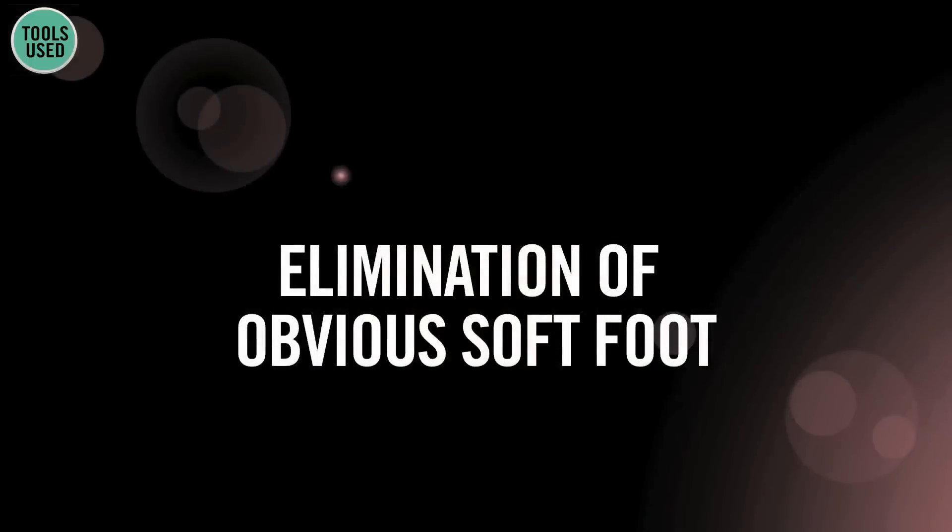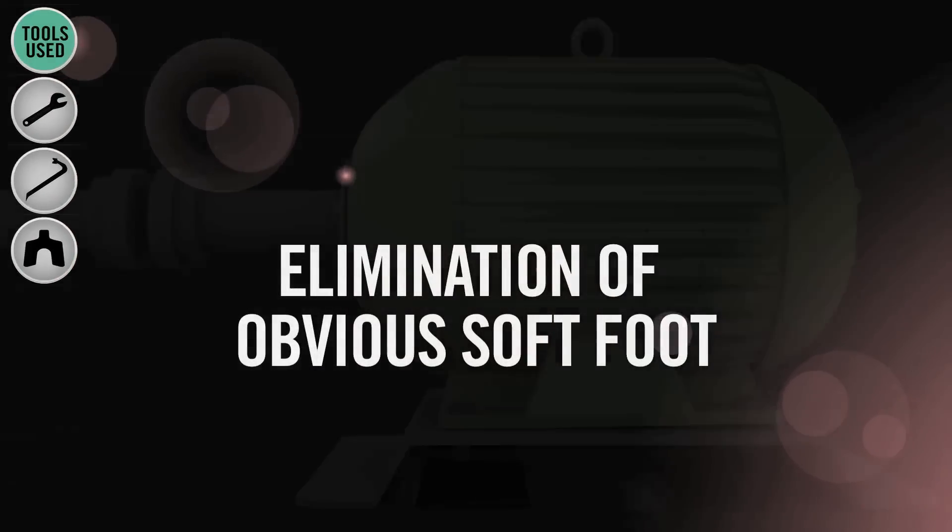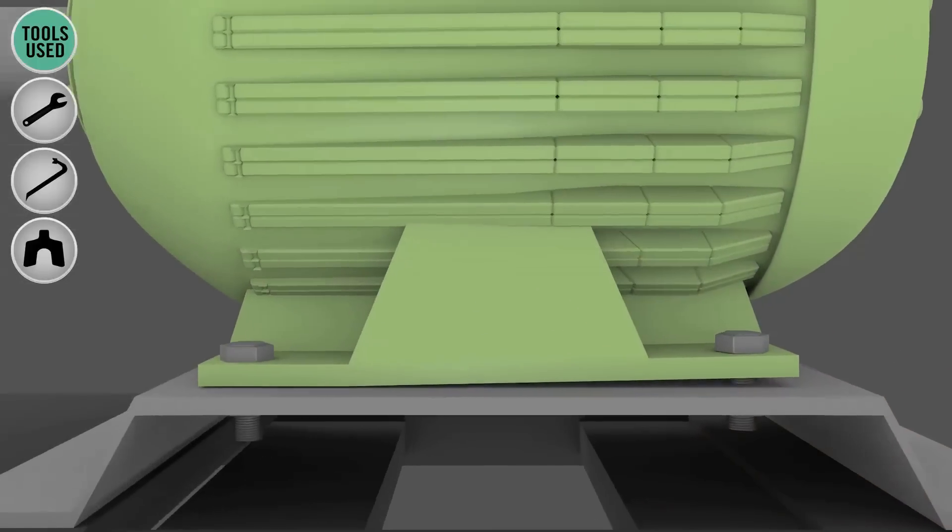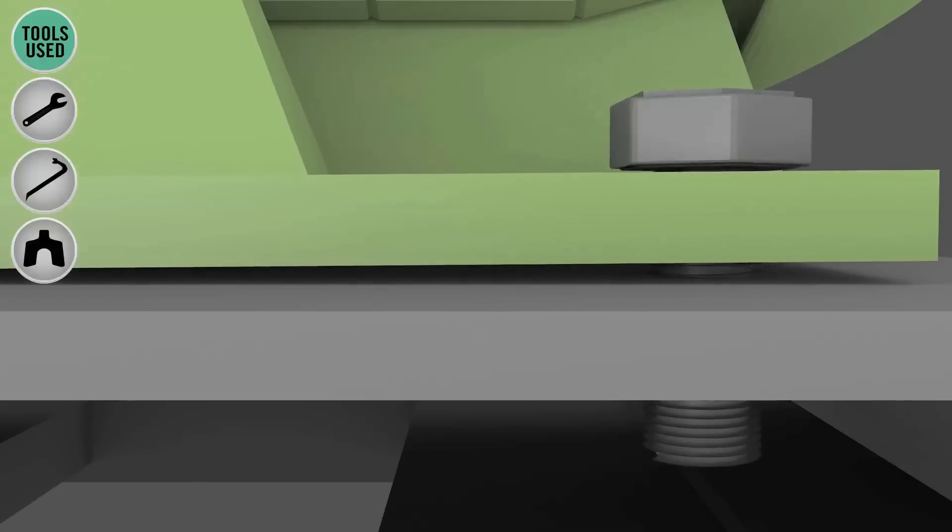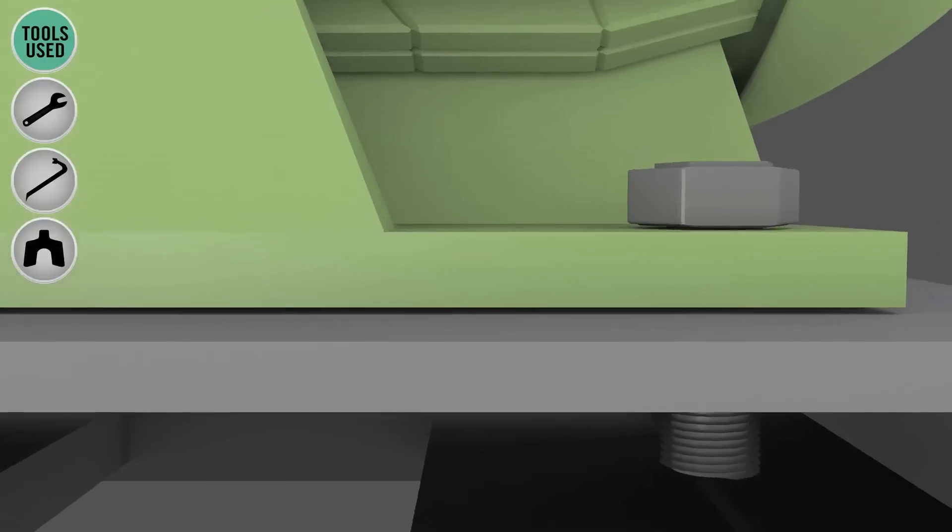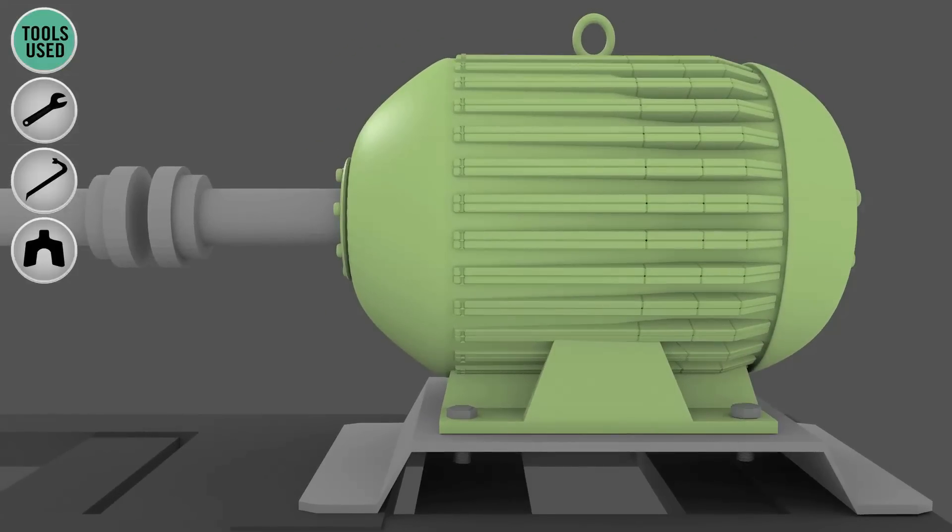The next pre-alignment step focuses on eliminating obvious soft foot. Obvious soft foot is when all four feet are not sitting in a common plane. If soft foot remains, then every time you loosen and tighten the bolts, the movable machine will come to rest at a different place, making it difficult to accurately measure and correct misalignment.